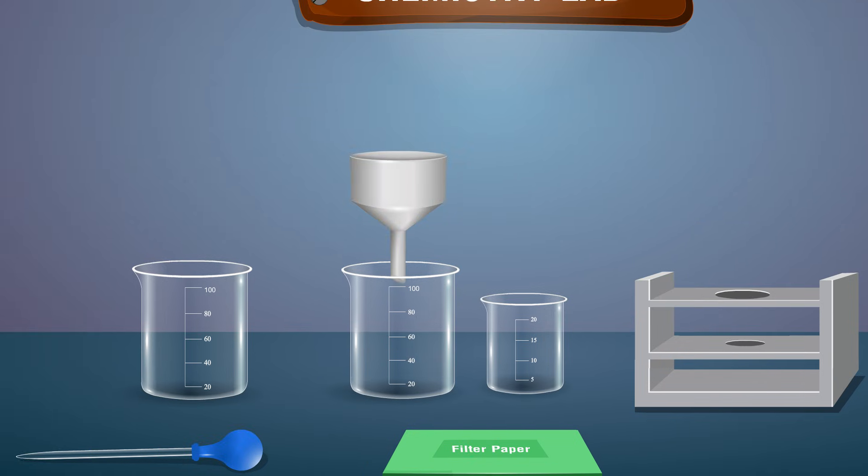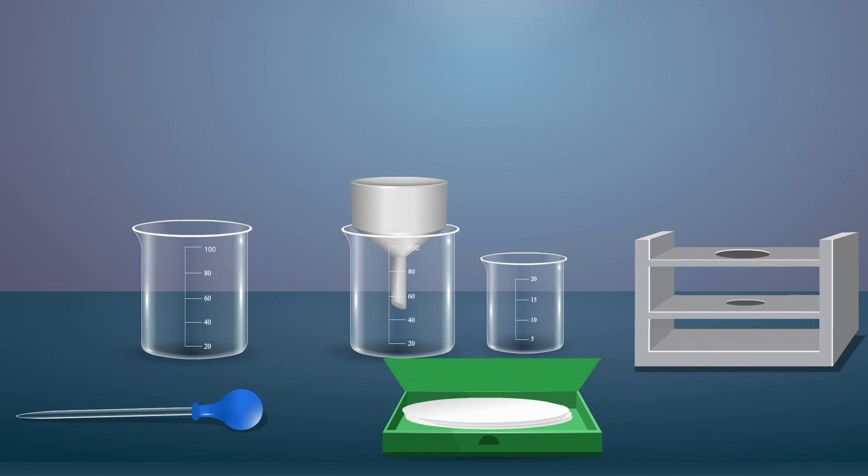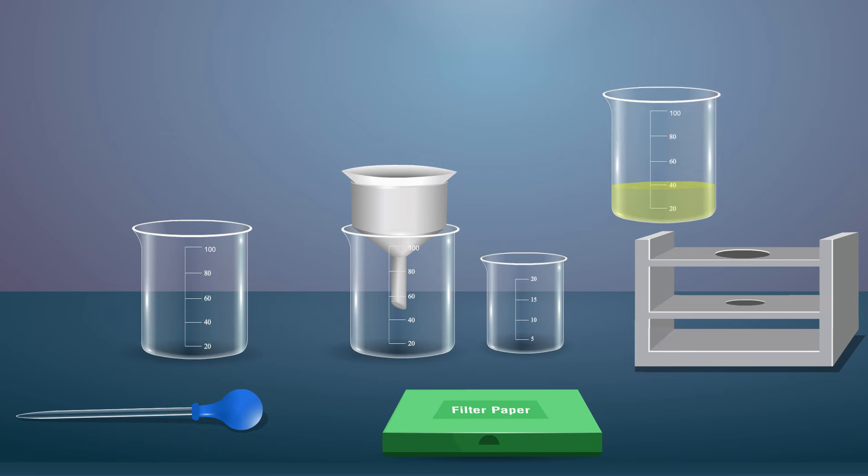Filter the yellow precipitate through a Buchner funnel and dry the crude sample in between the folds of filter paper. A yellow precipitate of para-amino-azobenzene, also called aniline yellow, is formed.